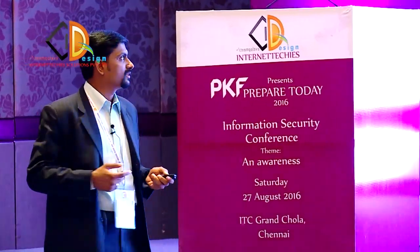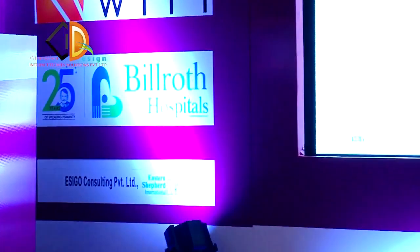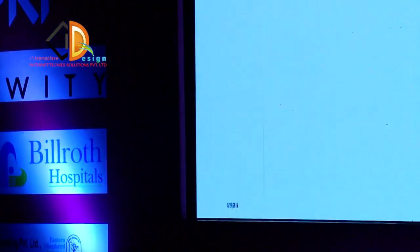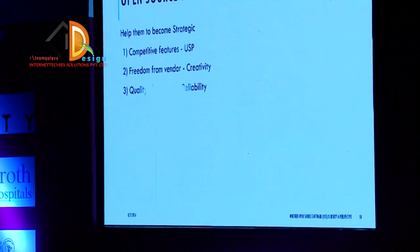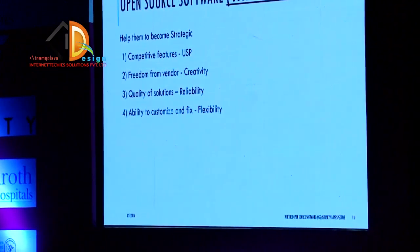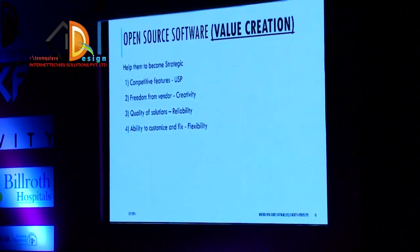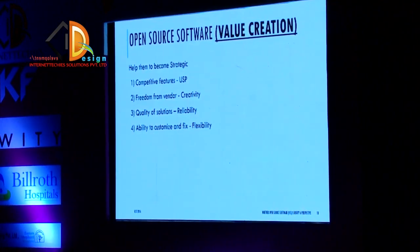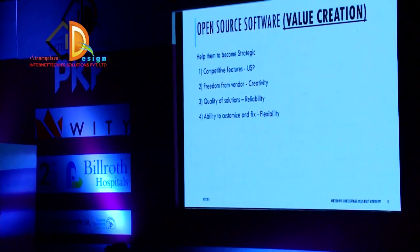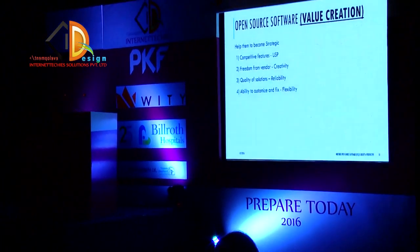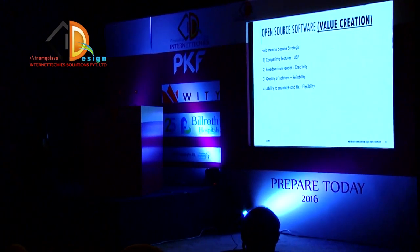The key takeaway is it speeds up the application development process. When you have a need, start thinking: is there any open source tool available to address it? Next, you can start becoming more strategic. Strategy can form in three categories: competitive — what is your unique selling point using open source software? Then, vendor unlocking — you are no longer confined to one vendor; you can pick based on need and create your unique proposition. That induces creativity and gives a sense of accomplishment.